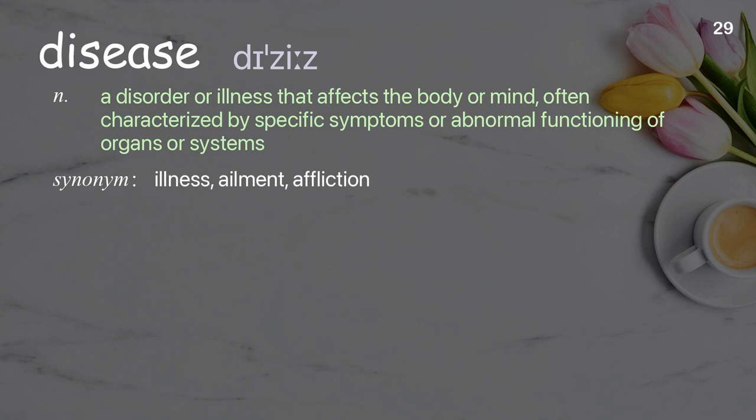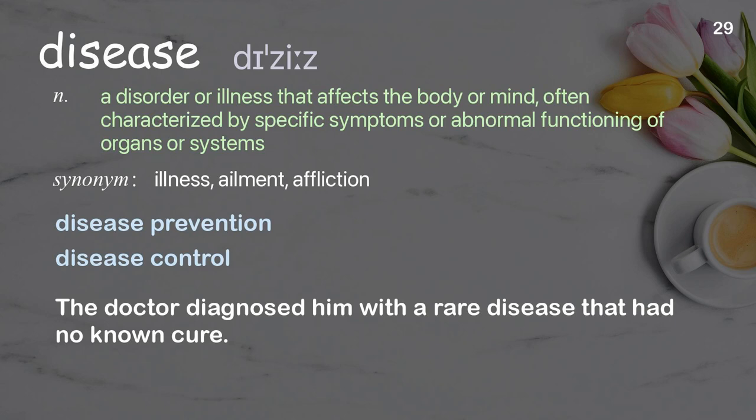Disease: a disorder or illness that affects the body or mind, often characterized by specific symptoms or abnormal functioning of organs or systems. Examples: disease prevention, disease control. The doctor diagnosed him with a rare disease that had no known cure.